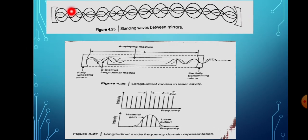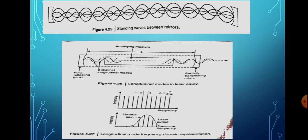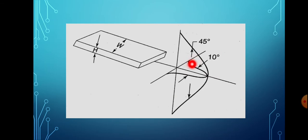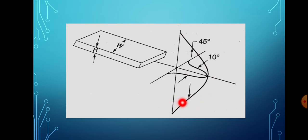Standing waves travel in the longitudinal direction along the length of the cavity. In the lateral direction — along the plane parallel to the P-N junction — waves travel along this line. In the transverse direction, perpendicular to the plane of the P-N junction, only half of the sinusoidal portion is shown. This illustrates the three directions of propagation within the laser cavity.